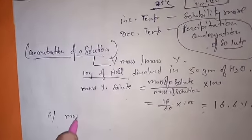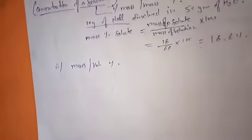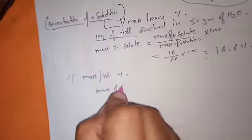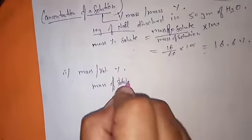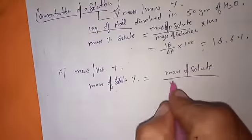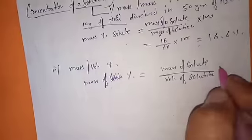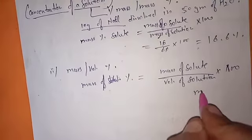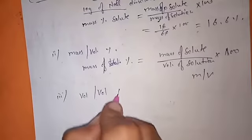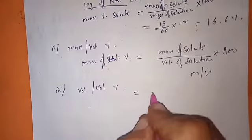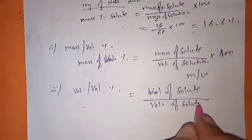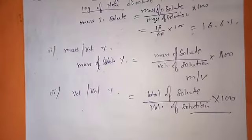The second method is mass by volume percentage: mass of solute divided by volume of solution, multiplied by 100 — this is the M/V representation. The third is volume by volume percentage: volume of solute divided by volume of solution, multiplied by 100. This gives you the volume by volume percentage.